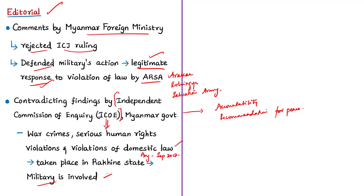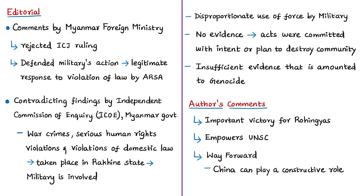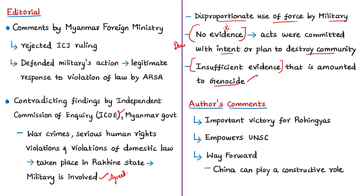The ICOE also concluded that killings of innocent villagers and destruction of homes were committed by some members of Myanmar security forces through disproportionate use of force. However, it mentioned no evidence was found to suggest the killings or acts of displacement were committed pursuant to an intent or plan to destroy the Muslim or any other community in northern Rakhine state. Myanmar thus argued there is insufficient evidence that crimes committed amounted to the international crime of genocide, while acknowledging military atrocities.